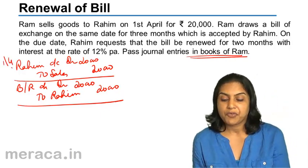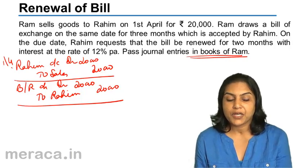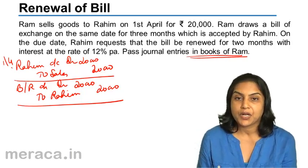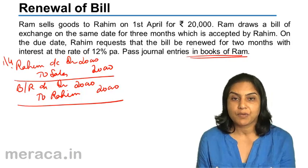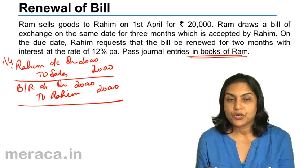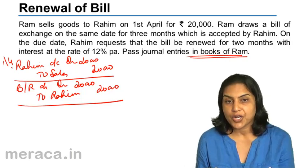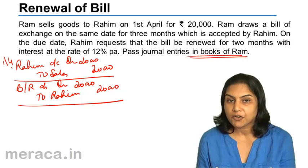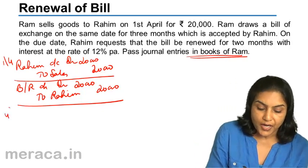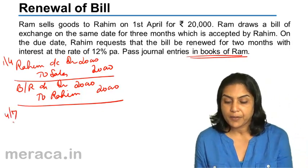If it is a bill for three months, 1st April plus three months gives us 1st July, plus three days of grace — 2nd, 3rd, and 4th — so 4th July would be the due date of the bill.